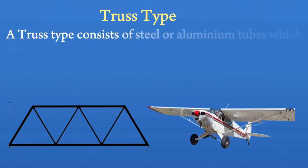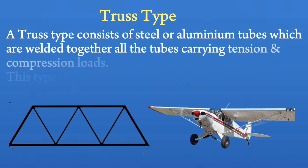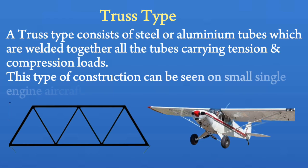Truss type. A truss type consists of steel or aluminum tubes which are welded together, with all the tubes carrying tension and compression loads. This type of construction can be seen on small single-engine aircraft.